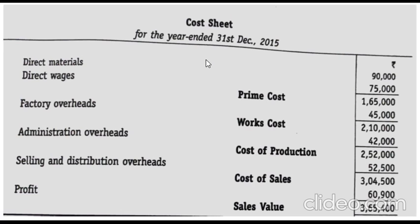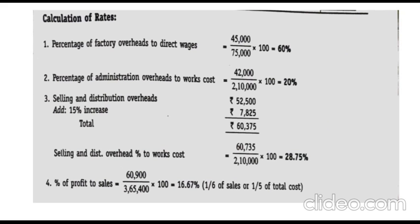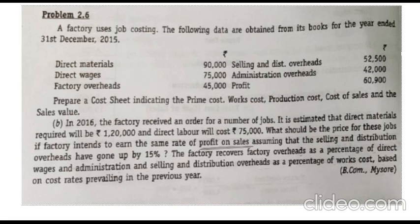After preparing the cost sheet we calculate working notes to find the overhead percentages from this cost sheet. These percentages will be used to prepare the estimated cost sheet. The first is factory overhead, then administration, then selling and distribution, and then profit. As per the question the factory recovers factory overhead as a percentage of direct wages, and administration and selling overhead as a percentage of works cost.